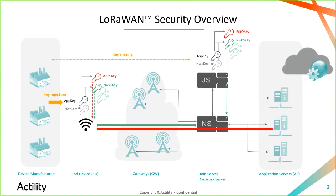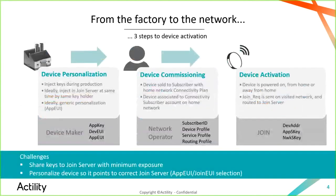Sometimes this step involves even more players, obviously weakening security. The third step is key distribution at the time of activation. That part is also a key step for security, and is partly covered by the LoRaWAN backend interface standard, which specifies how session keys derived by the join server may be shared with the network server and application server on the cloud platform side.